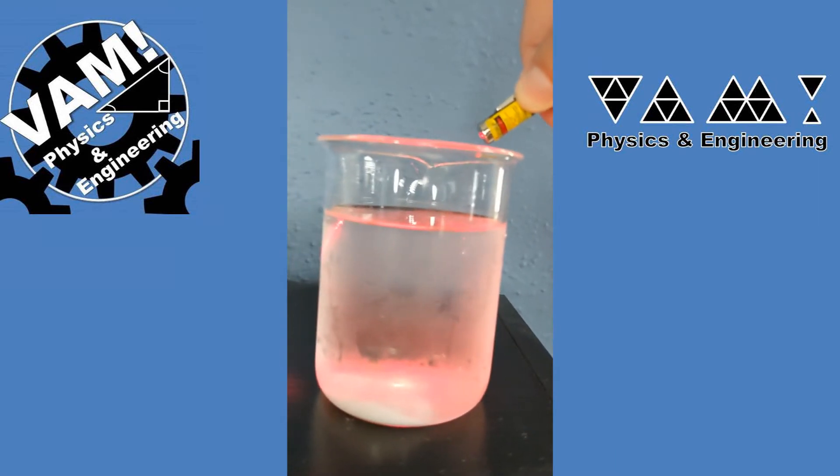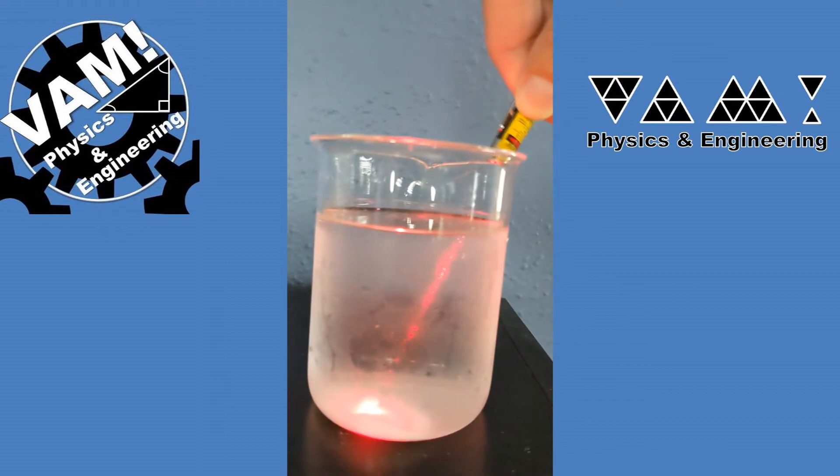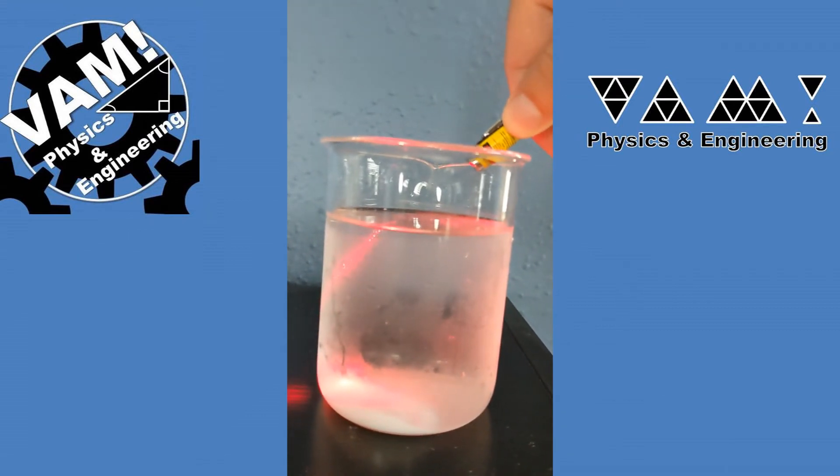In this problem, we have a beaker of water that we shine a laser pointer at the surface, and notice that the light refracts, or changes direction slightly.